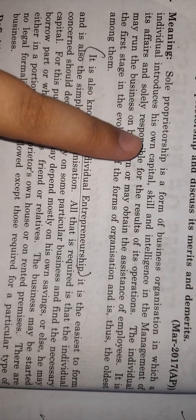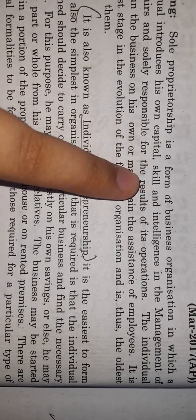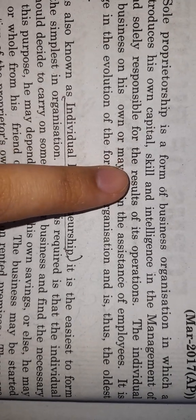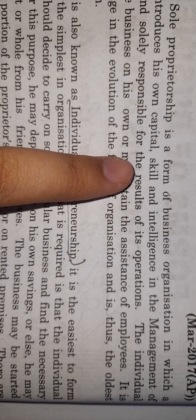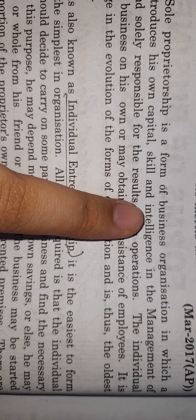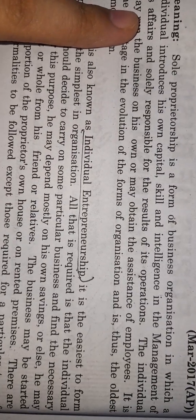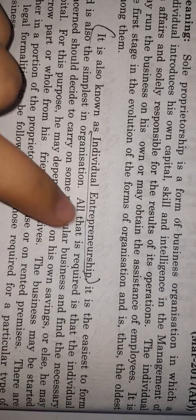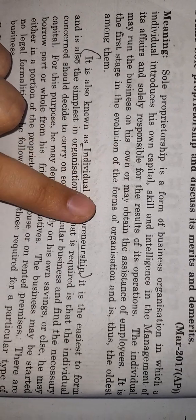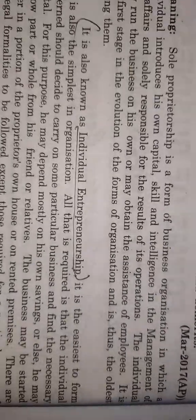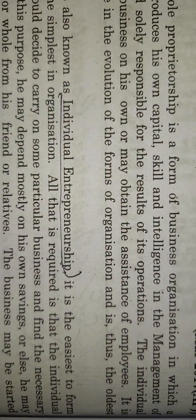In sole proprietorship, the business uses its own capital — capital means the money invested in a business. The owner uses their own skills; for example, if you have a skill to run a hotel, you will do business in that area. The individual may run the business on their own or may obtain the assistance of employees, providing jobs as needed.